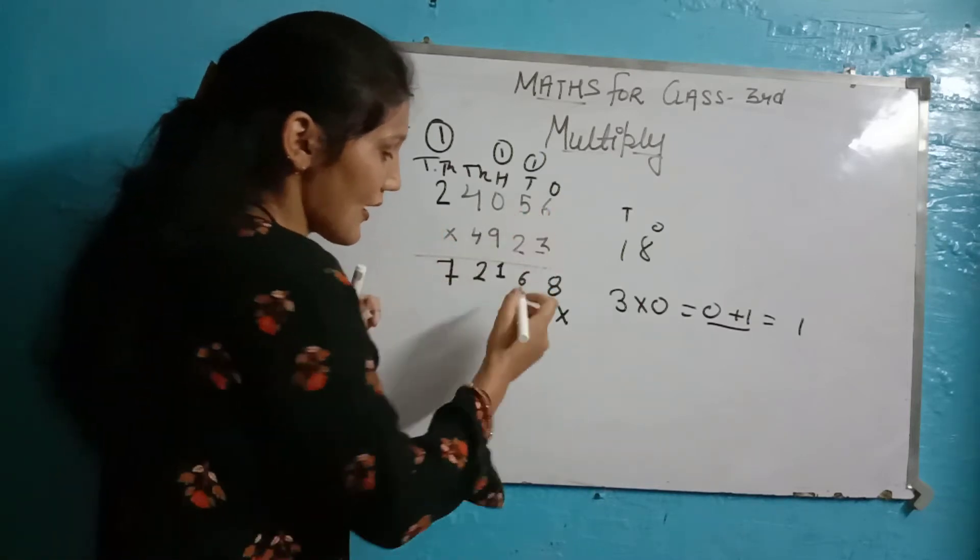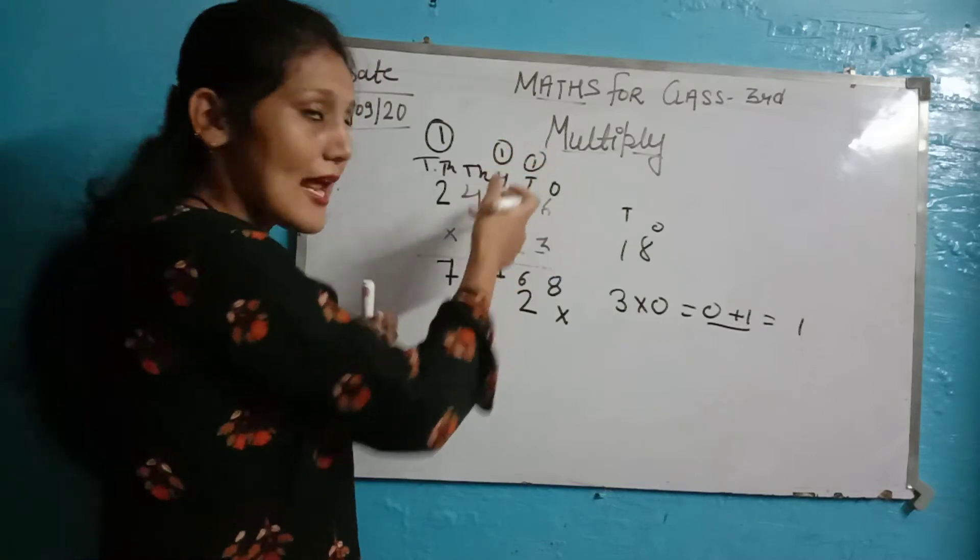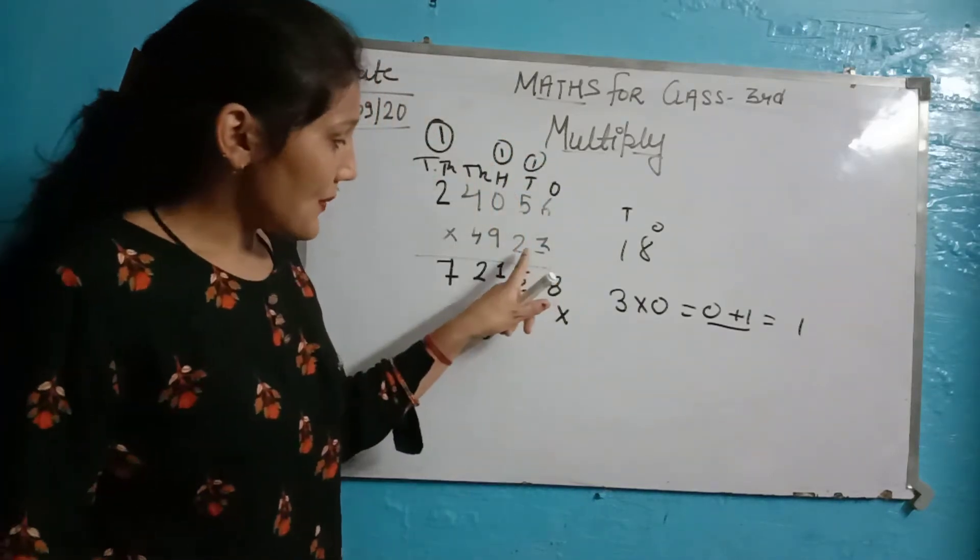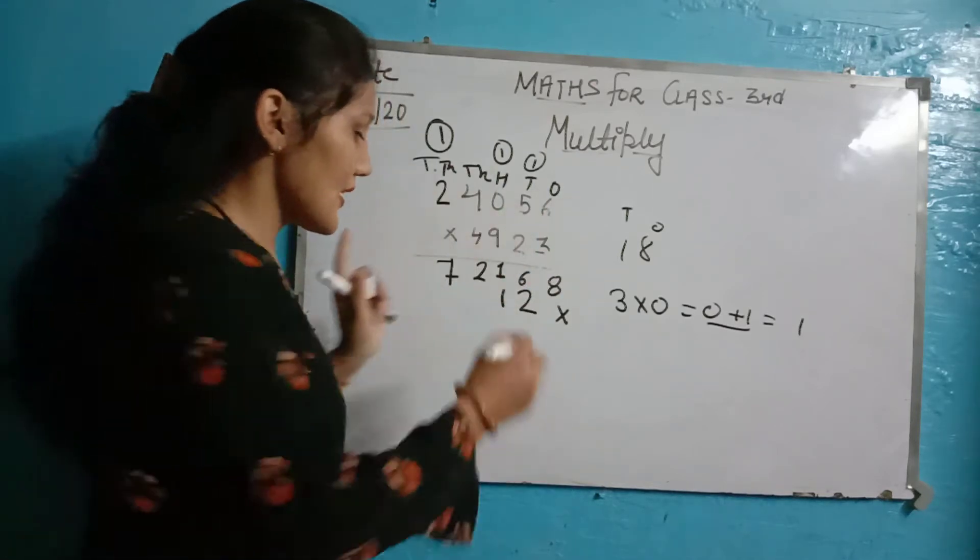Two times six are twelve, one carry. Two times five, ten. Ten plus one, eleven, one carry. Here we have zero. Two times zero, zero. Zero plus one equals one. Now we have two.